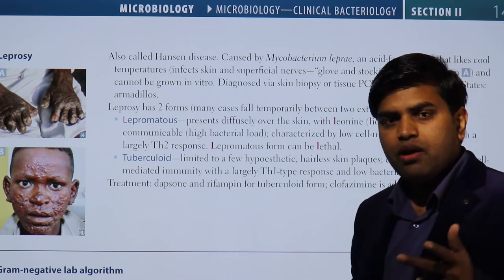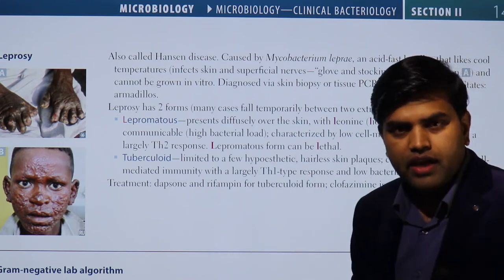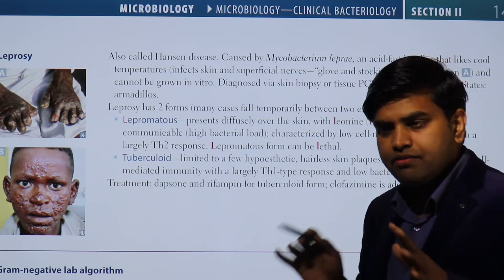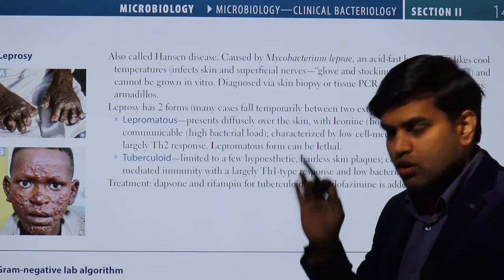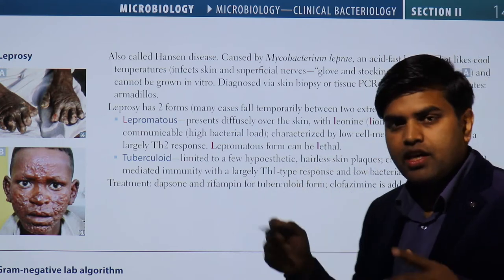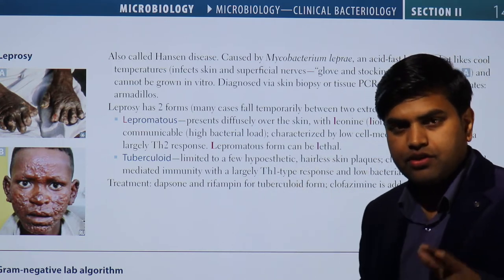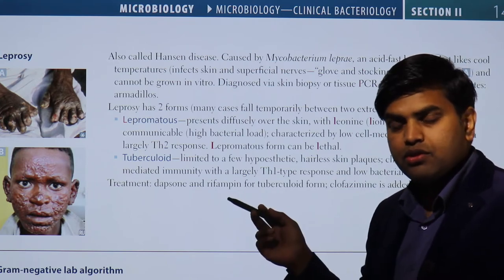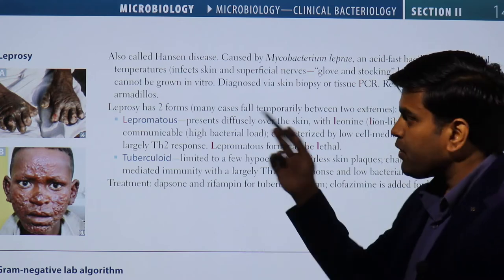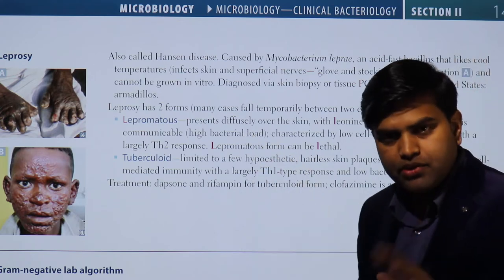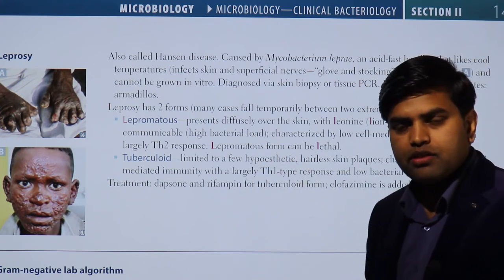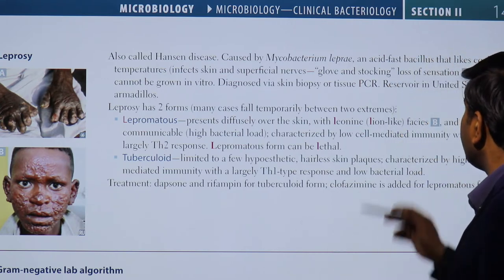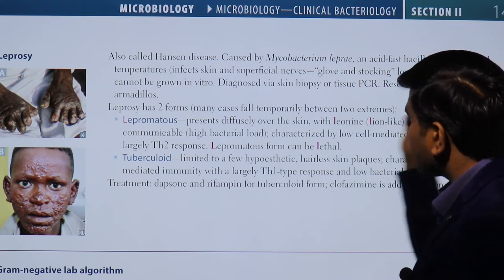You have to remember these organisms because they are very important. In acid-fast staining, the different organisms resist different acid concentrations: Mycobacterium tuberculosis resists 20%, Mycobacterium leprae resists 5%, and Nocardia species resists only 1%.